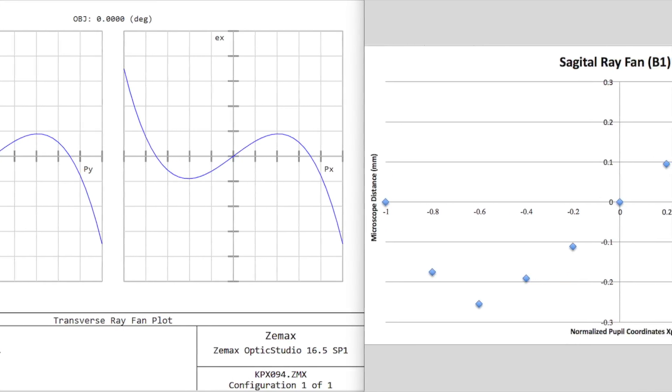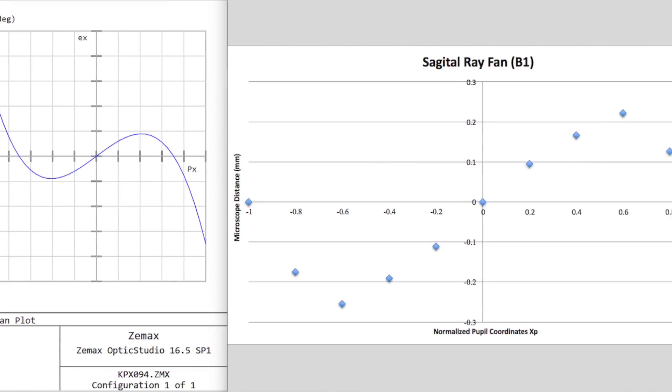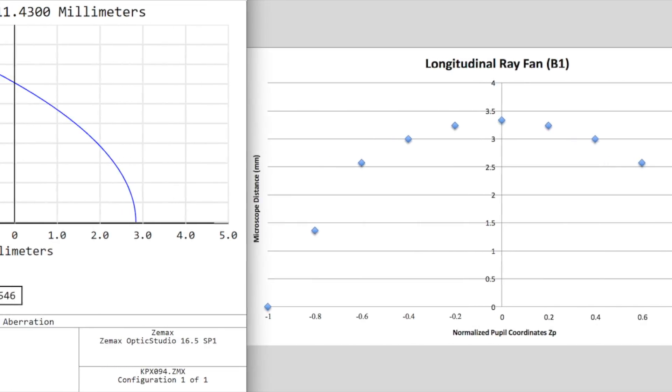When the lens was oriented so that it induced a larger amount of spherical aberration, our results were off from the theoretical plots by a factor of two.